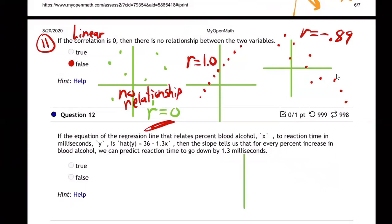Let me show it to you now. You could have the dots doing something like this, a very definite pattern. But R is still going to be zero. Because why? Because there's not a linear